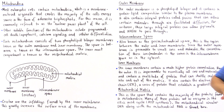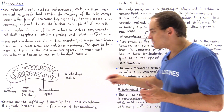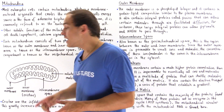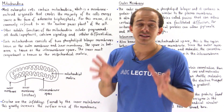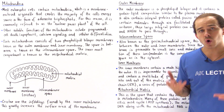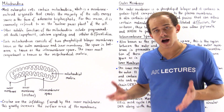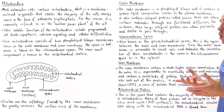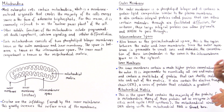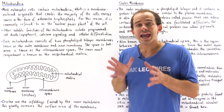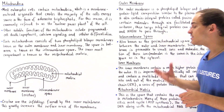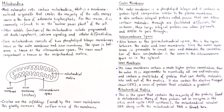The mitochondrial matrix contains the majority of the proteins found in our mitochondria. Most of these proteins act as enzymes in the citric acid cycle, also known as the Krebs cycle.